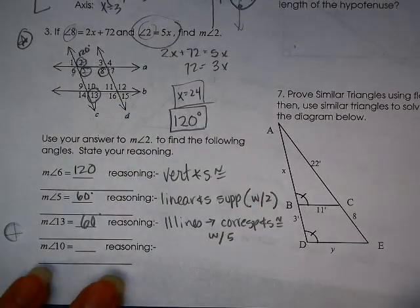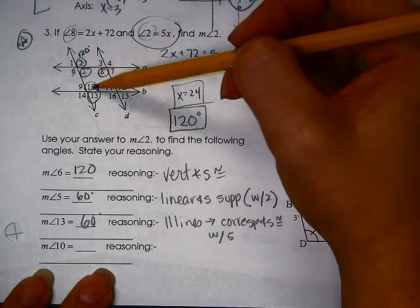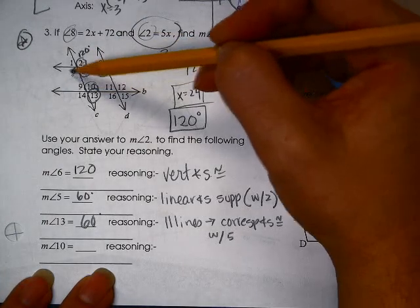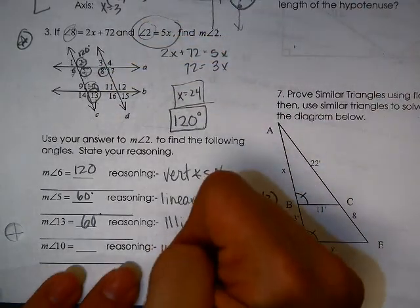And then angle 10 is this one here. So we could do corresponding with that one, same side interior with that one, alternate interior with that one, or linear with that one. And the one we haven't done yet is same side interior.